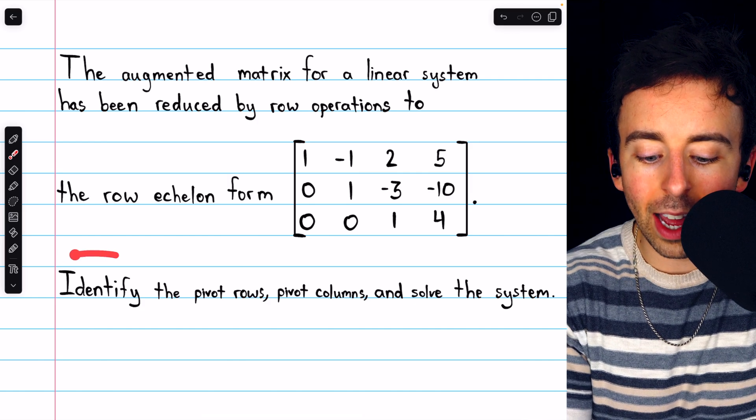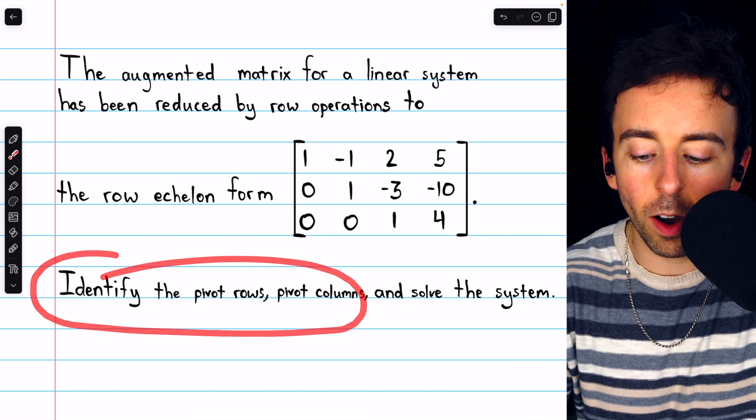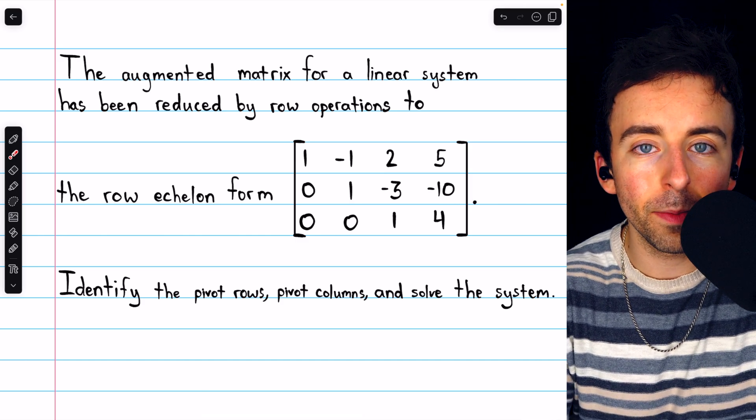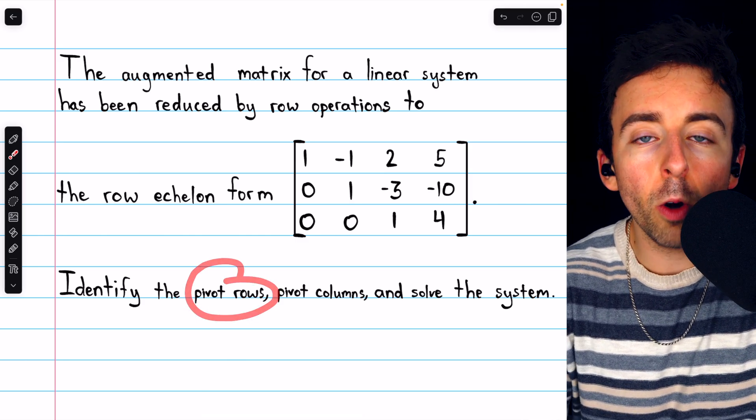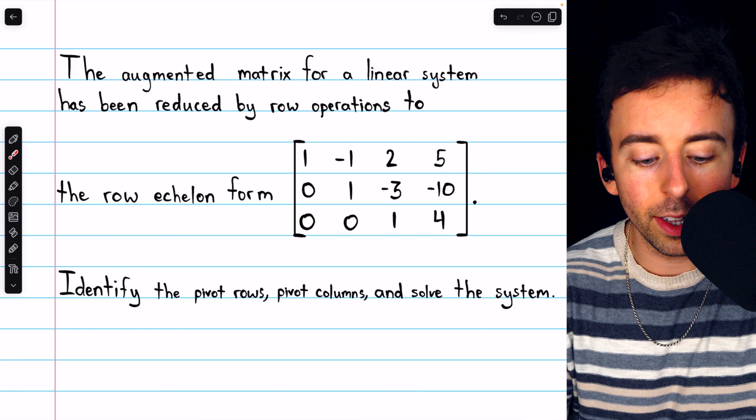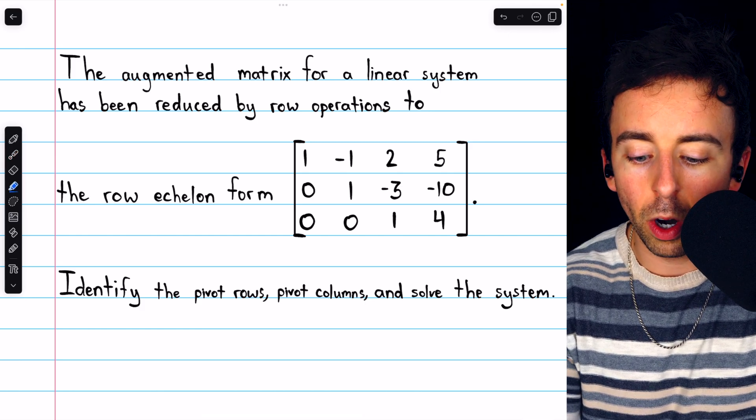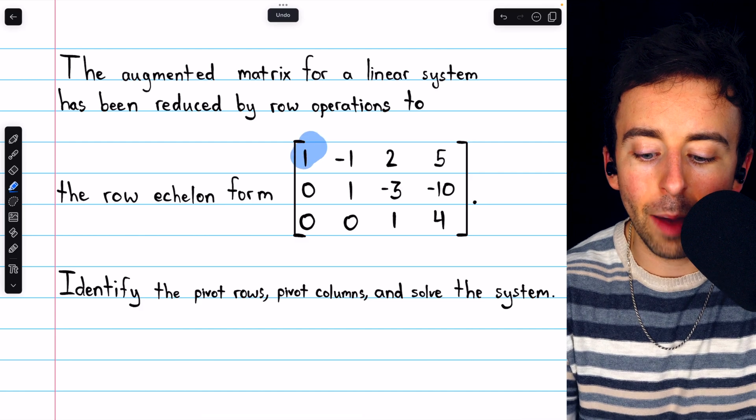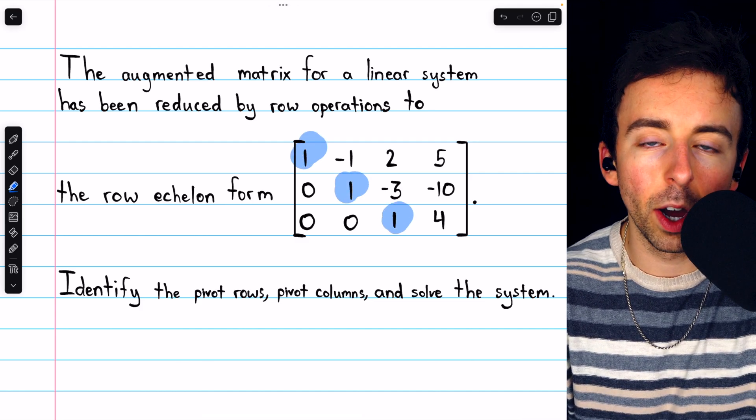From this information we want to identify the pivot rows and the pivot columns and use the row echelon form to solve the system. Remember that the pivot rows are rows that contain leading ones. In this case those are rows 1, 2, and 3. Each of these rows happens to contain a leading 1.